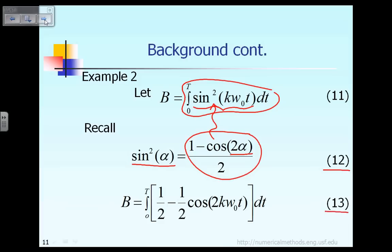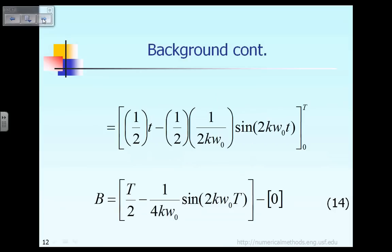Looking at equation 13, it is very easy to evaluate the integral. The integral of the first term, 1/2, is simply (1/2)t. The integral of the second term involving cos of an angle is straightforward. We evaluate the integral in equation 13, then substitute the upper limit capital T and lower limit 0. The result gives us equation 14: b = T/2 − (1/(4kω₀)) · sin(2kω₀t).